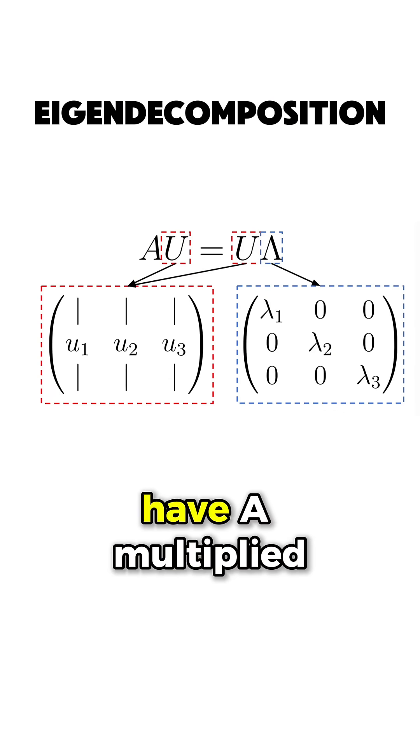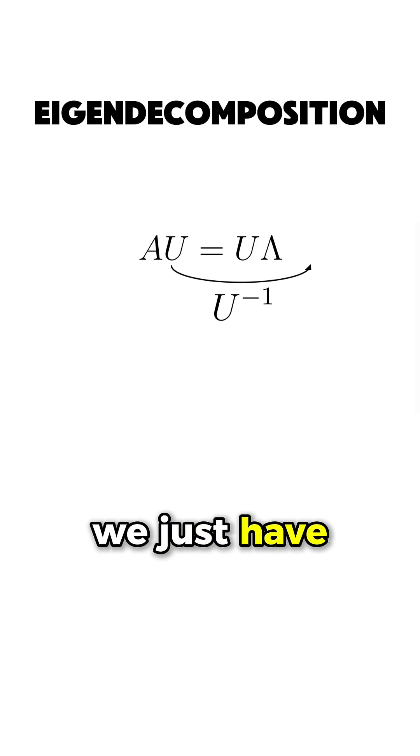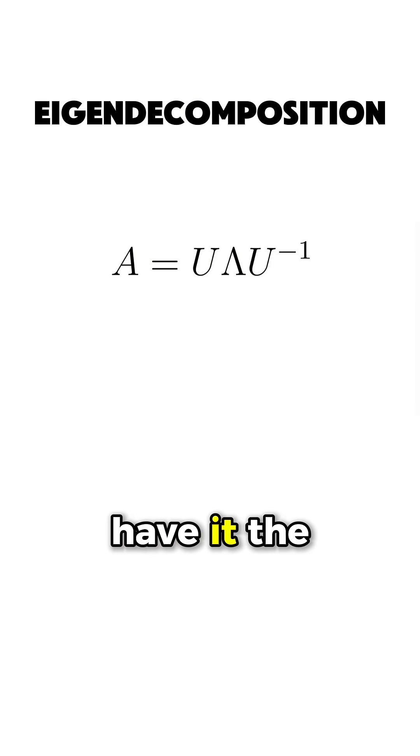Now we have A multiplied by U is equal to U multiplied by lambda. Finally, we just have to perform one more step to obtain the eigendecomposition of matrix A, which is multiplying by the inverse of U on the right. And here we have it, the eigendecomposition of matrix A.